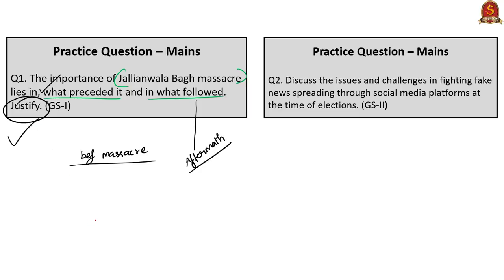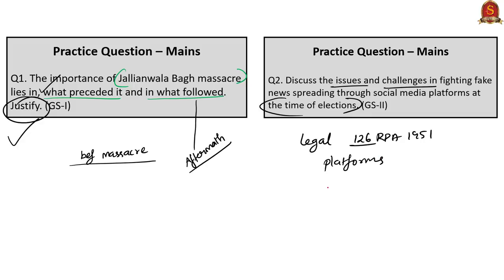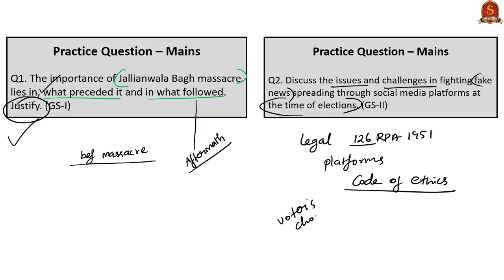The next mains question reads: 'Discuss the issues and challenges in fighting fake news spreading through social media platforms at the time of elections.' Here you can discuss the existing legal provisions—Section 126 of Representation of Peoples Act 1951—and the issues with regulating social media platforms, the right to campaign, issues related to freedom of expression, whether various social media platforms are living up to the commitments given in the voluntary code of ethics, and how misinformation is a threat to free and fair elections and may influence the voting pattern and voters' choices.